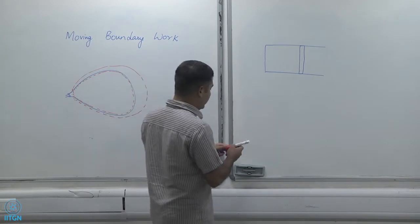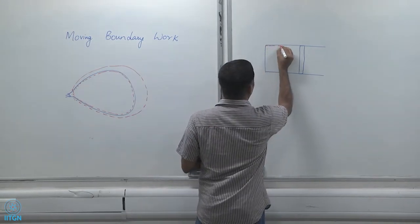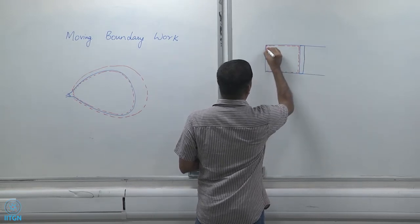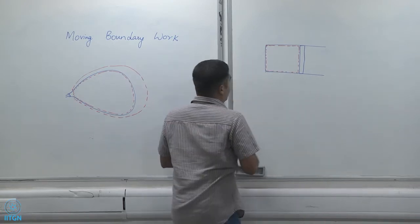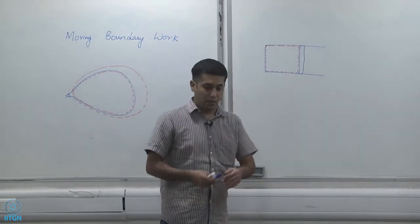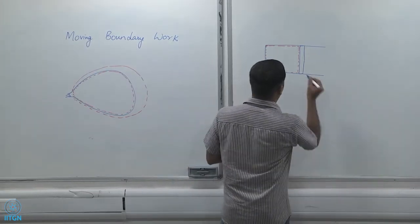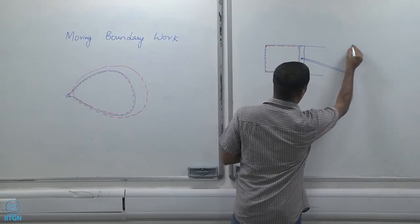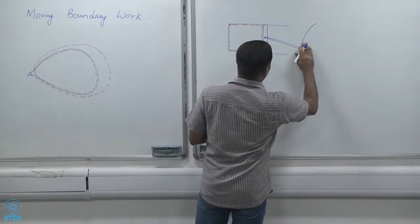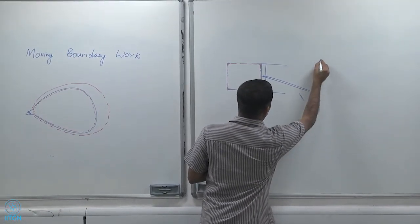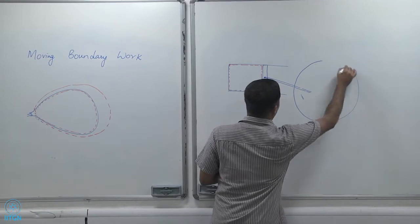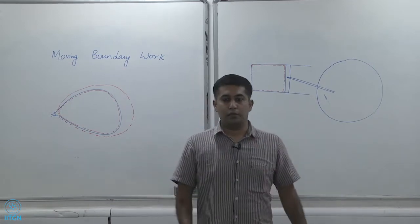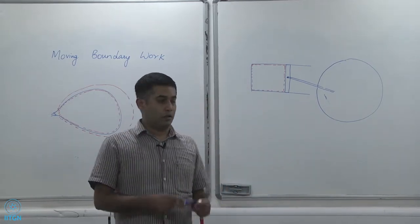If we consider this as our system, then this system obviously does work on the surroundings. What is it doing work on? Usually this is connected to a crankshaft that is then connected to a wheel. It rotates a wheel and that's how motorcycles move, how cars and trucks move.